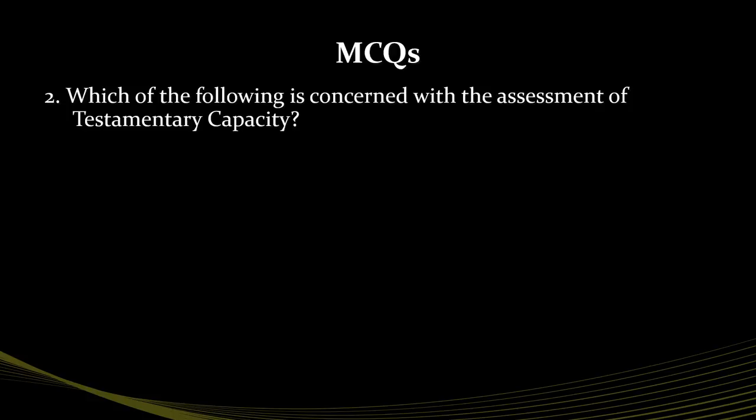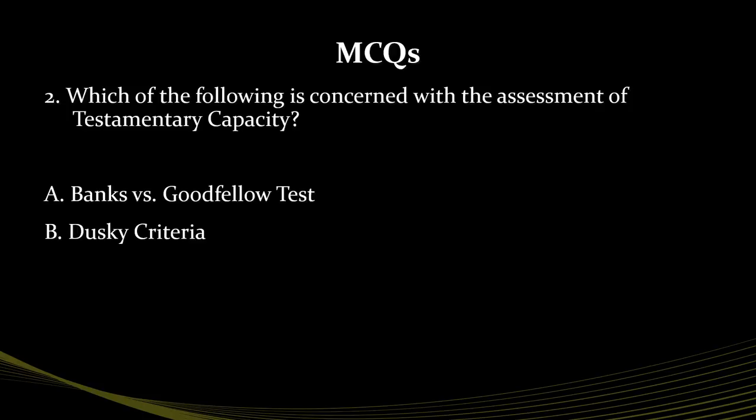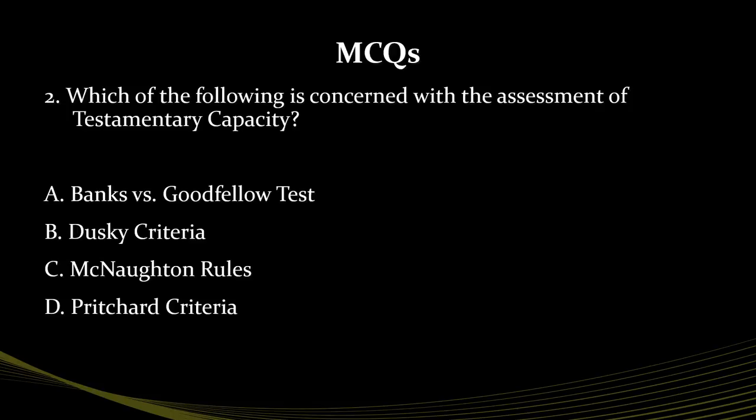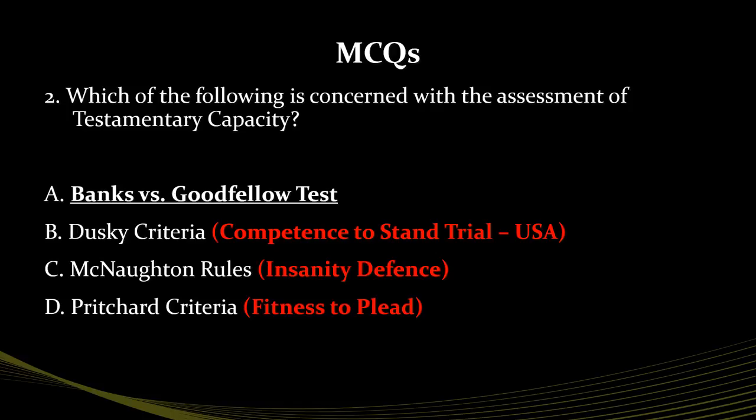Question 2: Which of the following is concerned with the assessment of testamentary capacity? The correct answer is the Banks versus Goodfellow test, which is concerned with testamentary capacity. The Dusky criteria is concerned with competence to stand trial, which is a concept used in the US. The McNaughton rules relate to the insanity defense, while the Pritchard criteria are concerned with fitness to plead.